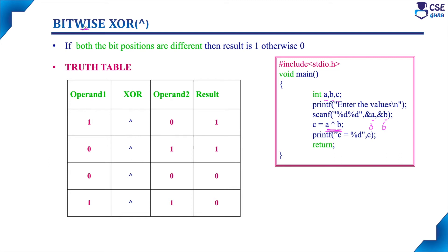The bitwise operator is used to manipulate bits — the operation is performed only on the bit positions. The decimal value is converted to a binary value, the exclusive OR manipulation happens on the binary bits, and the result is obtained in binary form. That binary result is then converted back to a decimal value, which is stored in variable c. Input and output are in decimal form; internally, the manipulations are done using binary values.